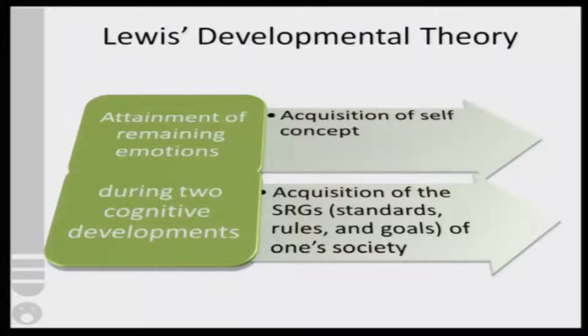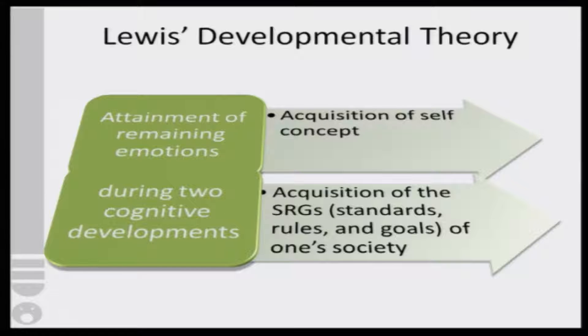This theory further says that to attain the remaining emotions, which happens during two cognitive developments: first, one acquires the self-concept — who am I? — and second, the acquisition of standards, rules, and goals of the society in which the individual is living and growing up. These standards, rules, and goals are called SRGs. So Lewis's developmental theory says that we acquire our concept of the self and also the standards, rules, and goals of our society — what my society expects of me.